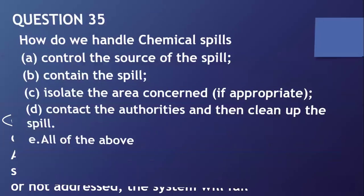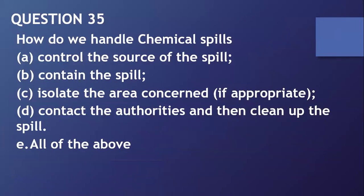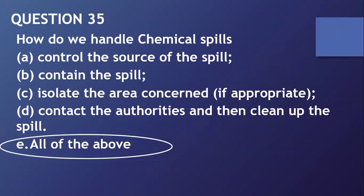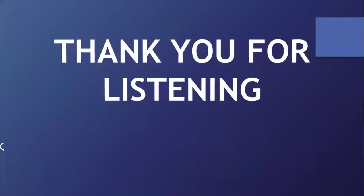Question number thirty-five: how do we handle chemical spills? A, control the source of the spill. B, contain the spills. C, isolate the area concerned if appropriate. D, contact the authorities and then clean up the spill. E, all of the above — go with that. Having reached the end of this question and answer session, please subscribe, comment, share, and like. Thank you for listening. God bless and take care.